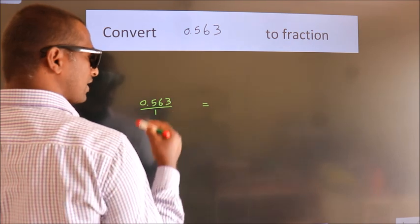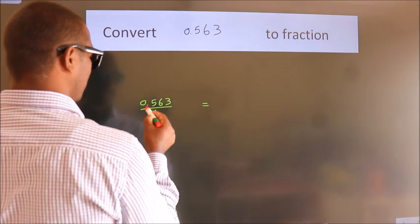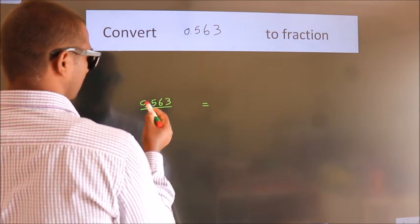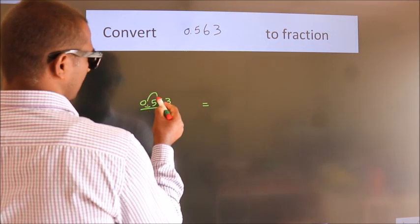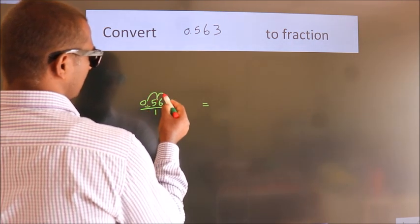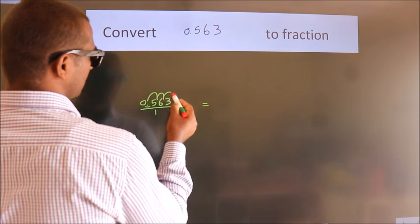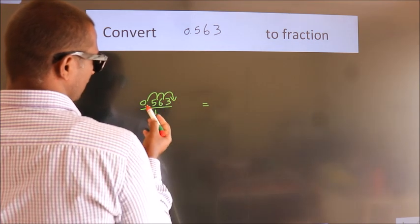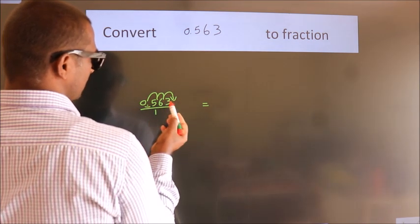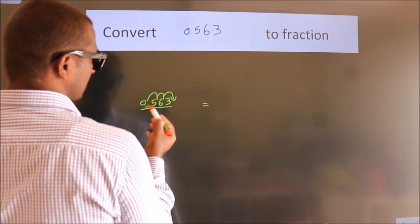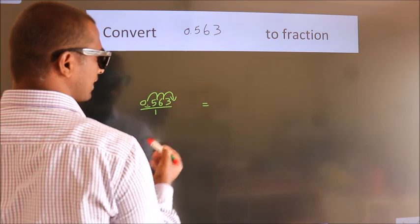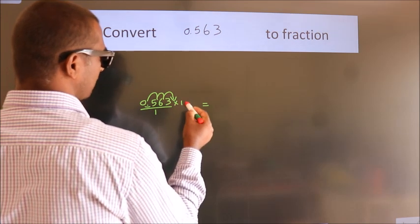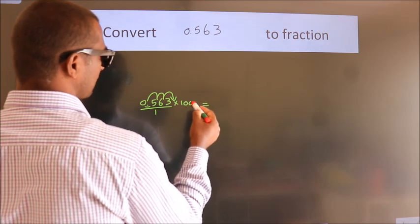we have to move this decimal after 1, 2, 3 numbers. To move this decimal after 3 numbers, we have to multiply it with 1000.